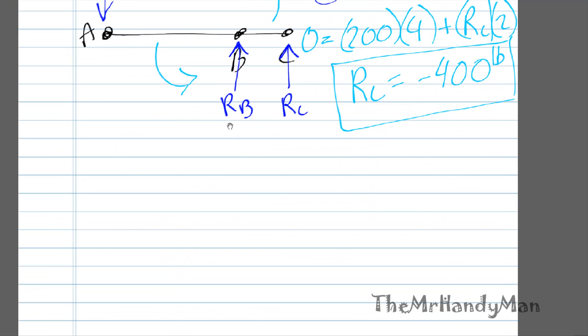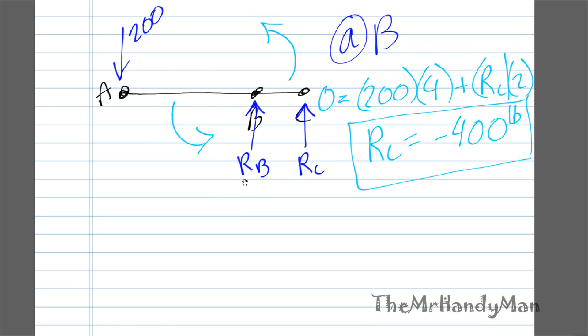Negative 400 just indicates that the arrow should actually be going downward. We don't need to worry about that. Now that we have RC, we can just use the sum of all forces. Sum of all forces must equal zero, so all forces in the Y direction must equal zero. We can say that negative 200 minus 400 plus RB must equal zero. Calculating that out, you can find that RB is actually 600 pounds.